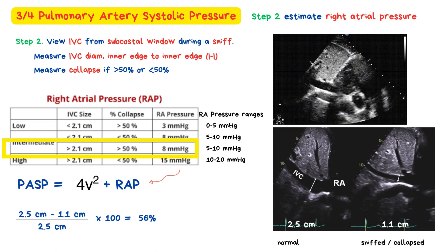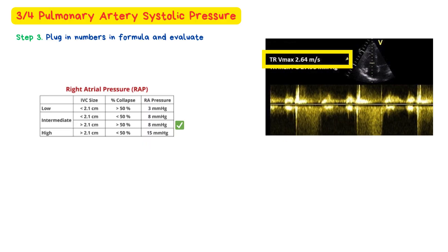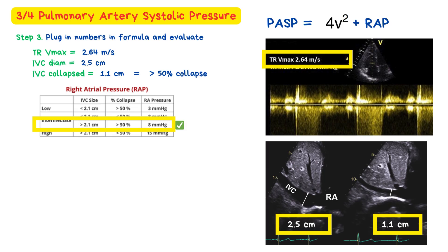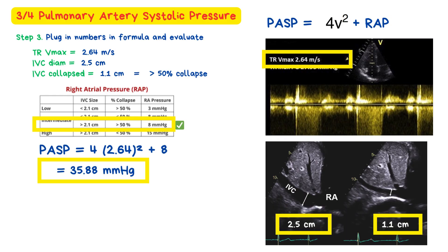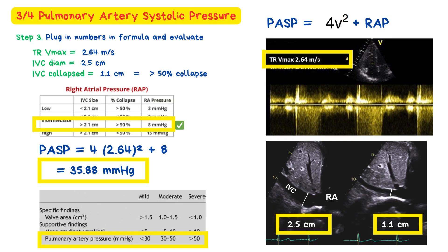Step 3: Plug in our values to calculate PASP using the formula: PASP = 4 × TRVmax² + RAP. In our case, TRVmax is 2.64 m/s and RAP is 8 mmHg. So: 4 × 2.64² ≈ 27.9, plus 8, gives a PASP of approximately 35.9 mmHg. Step 4: Evaluate. According to ASE guidelines, a PASP of ~35 mmHg falls into the moderate pulmonary hypertension range, telling us our patient is beginning to experience elevated pulmonary pressures as a hemodynamic consequence of mitral stenosis.